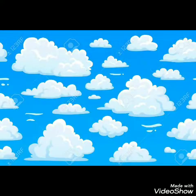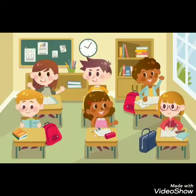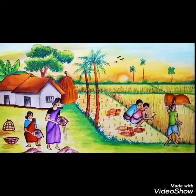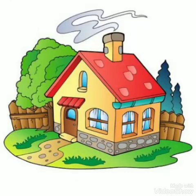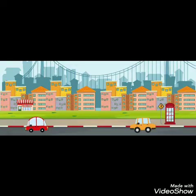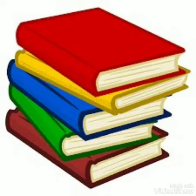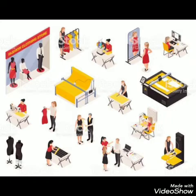Next, we are going to see about Man-made Things. The things that are made by humans are known as Man-made Things. For example, House, Car, Road, Building, Table, Chair, Book. These all are made by humans, so we can call them Man-made Things.